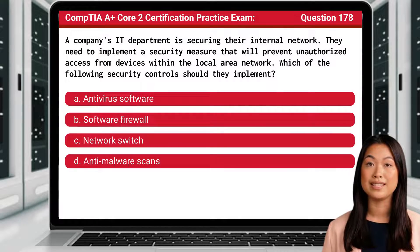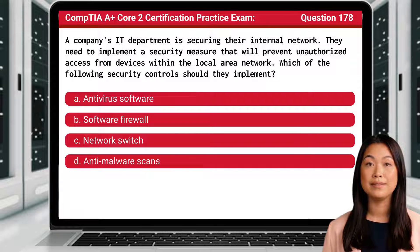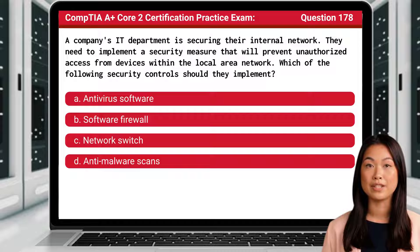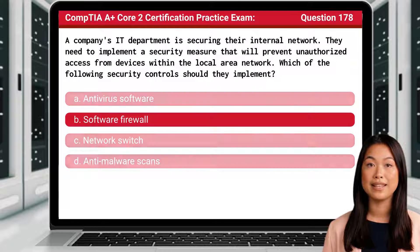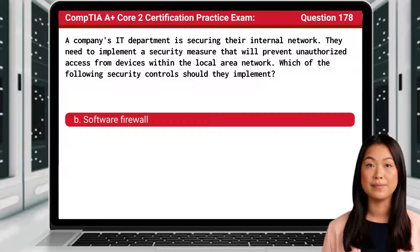Question 178. A company's IT department is securing their internal network. They need to implement a security measure that will prevent unauthorized access from devices within the local area network. Which of the following security controls should they implement? The answer is B. Software firewall.